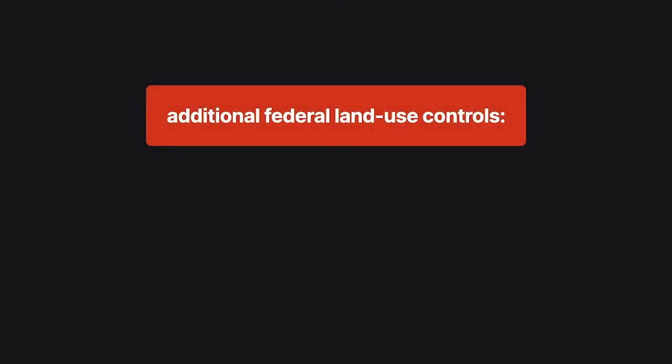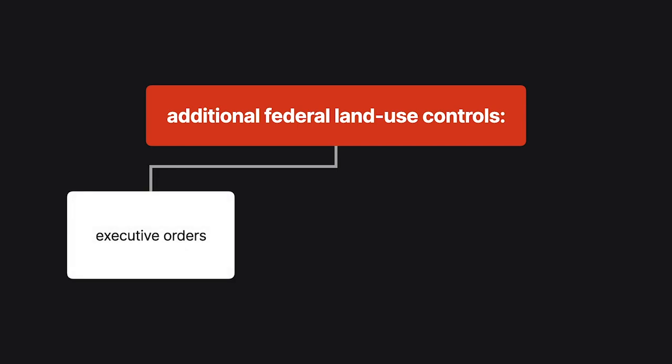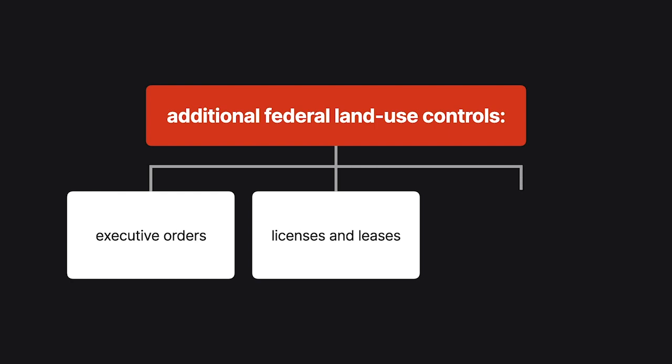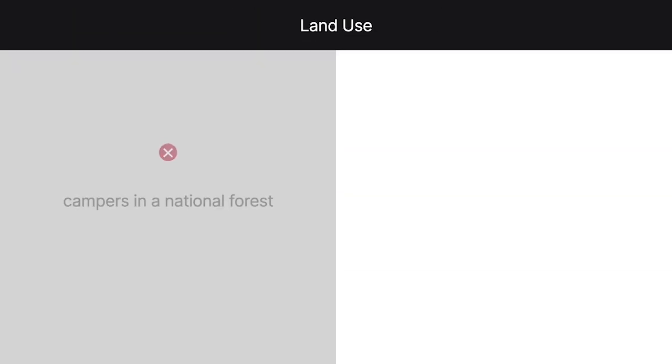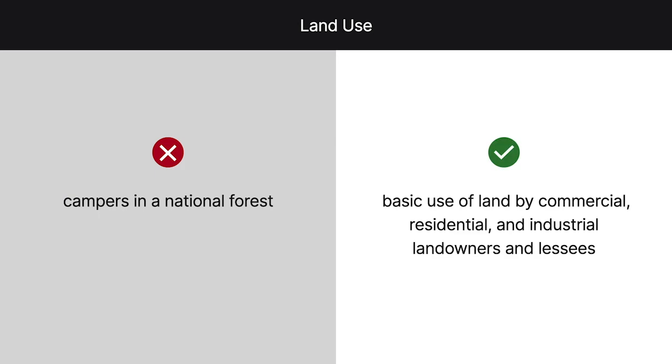Additional federal land use controls: on top of the laws, regulations, and caselaw, there are executive orders, often shaped by political motivations. You'll see big differences between how President Trump and President Biden approached environmental law — Biden did a lot to countermand the previous Trump administration. There are also licenses and leases to use public lands for various purposes, including ranching and mineral prospecting, and exercise of day-to-day police powers by federal agencies within their statutory jurisdictions — for example, park rangers on patrol in national parks. For our purposes, when we refer to land use, we're referring to the basic use of land by commercial, residential, and industrial landowners and lessees.